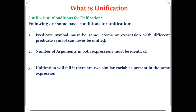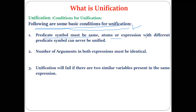Before seeing the example, we need to understand the basic conditions or rules for the unification process. If you want to make two atomic expressions identical, these three important rules must be followed. The first condition is: the predicate symbol must be the same. Atoms or expressions with different predicate symbols can never be unified.